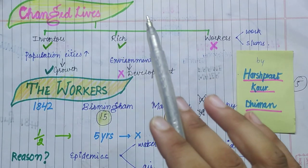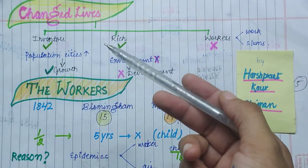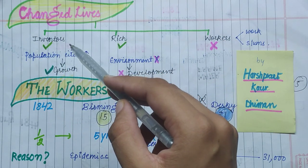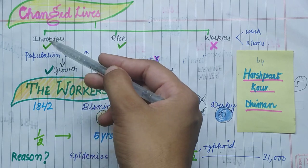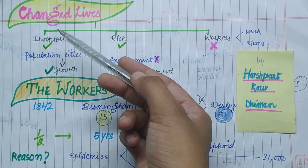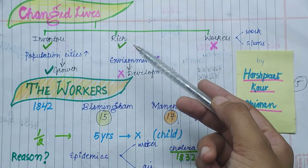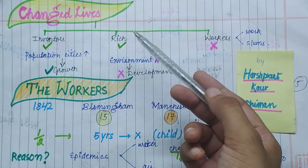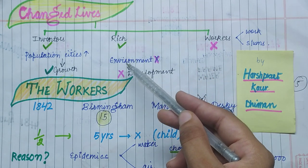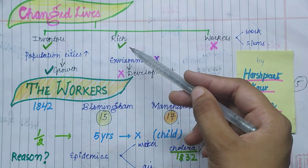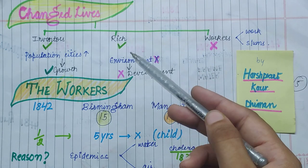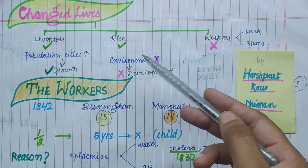After the industrial revolution, there were three categories whose lives changed. First, the inventors — they invented things and became famous. Second, the rich people such as landowners who invested their money so that it would multiply, and this happened for them because their factories produced at high scale and generated profit.